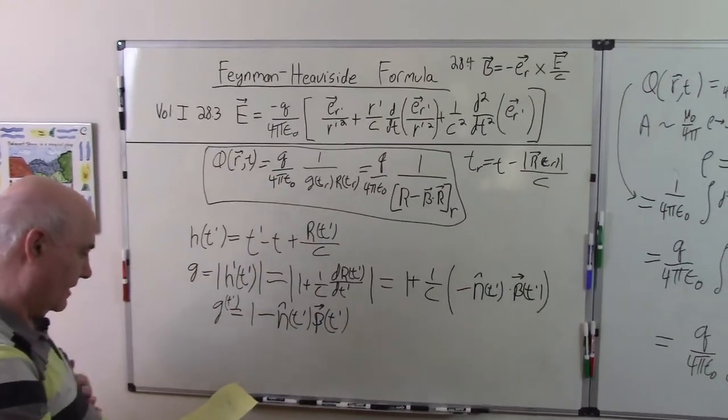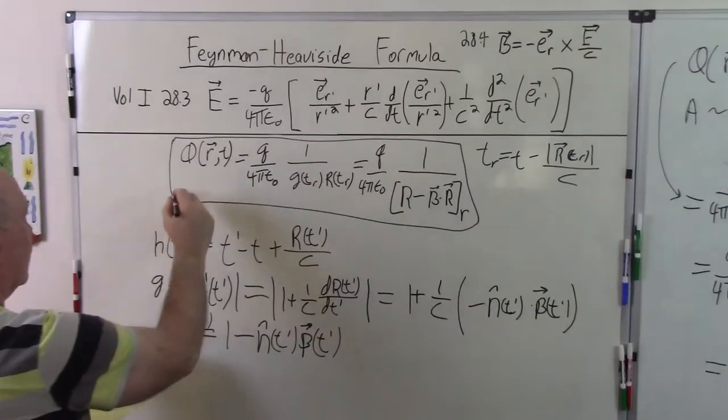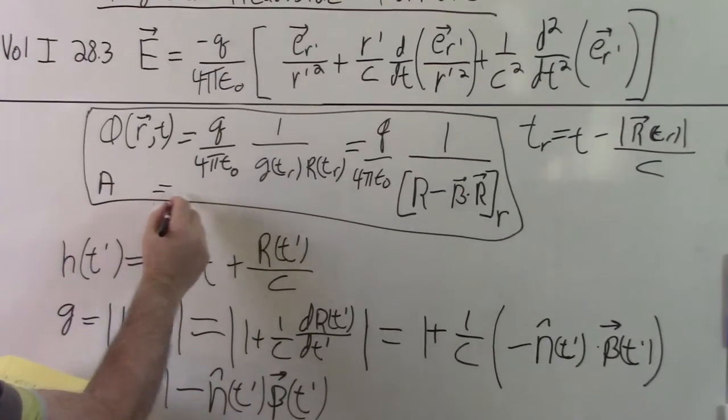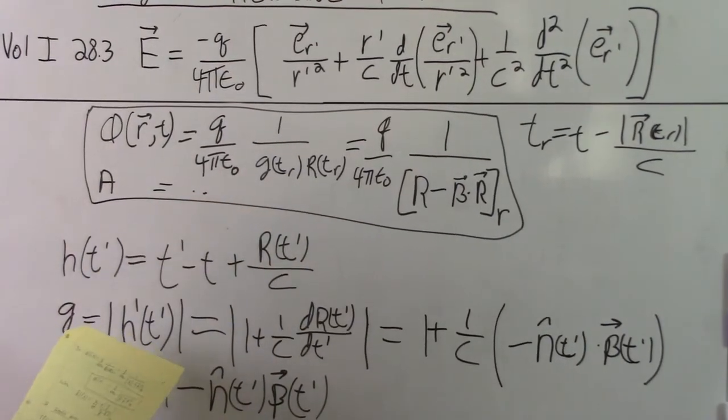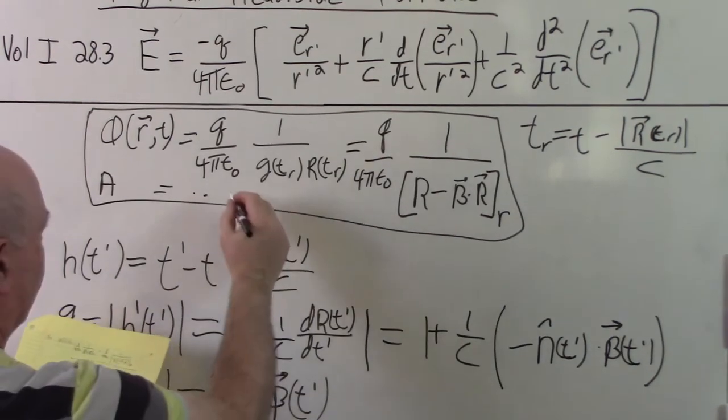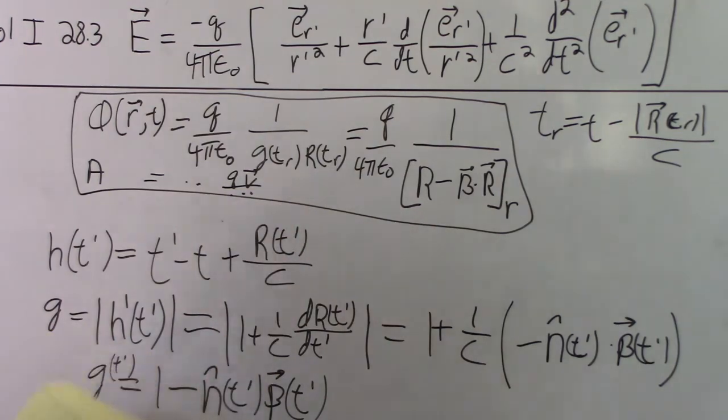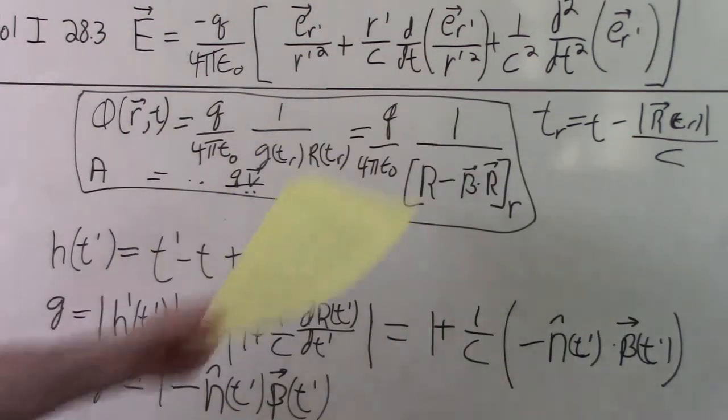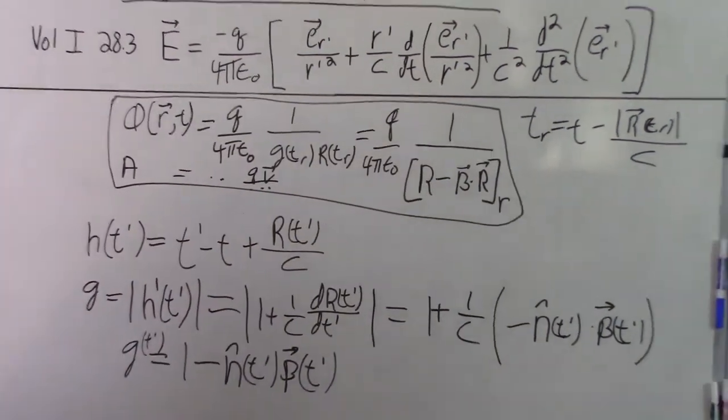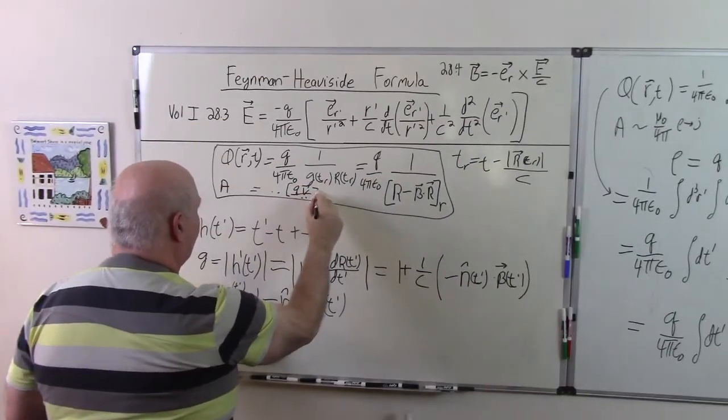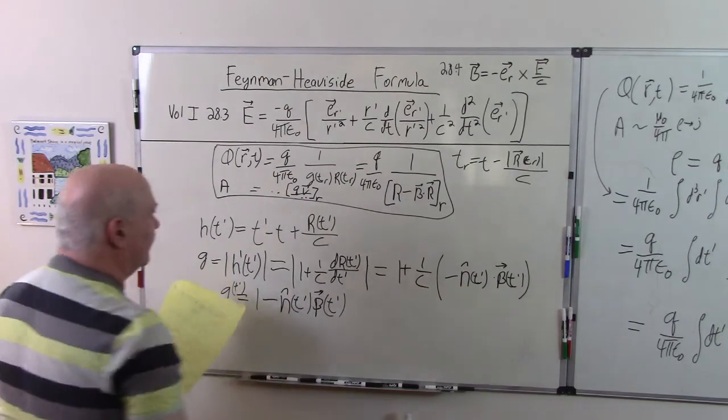And if we want A, all we do, we put a v in the denominator. So, we just multiply that by v. But it's all evaluated. The v is also evaluated at that retarded time.